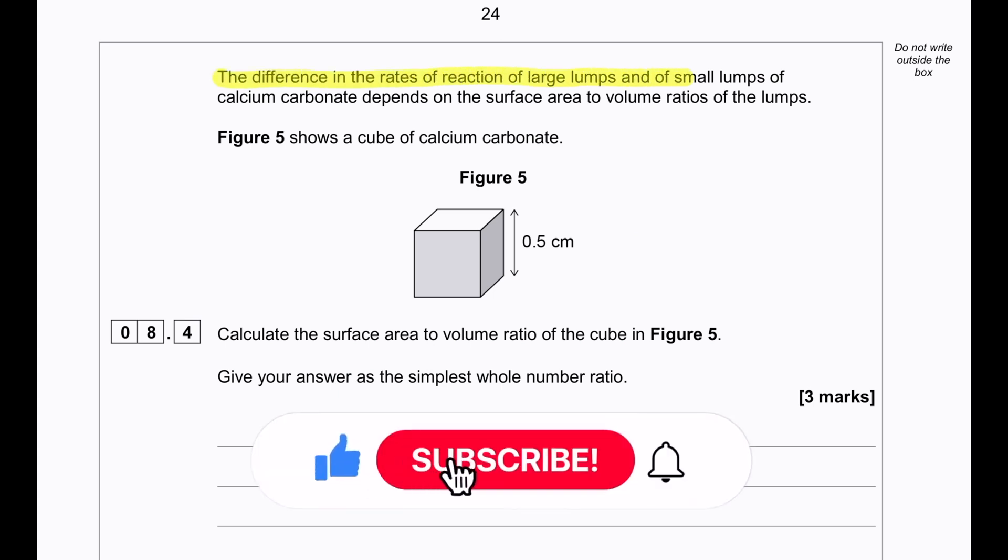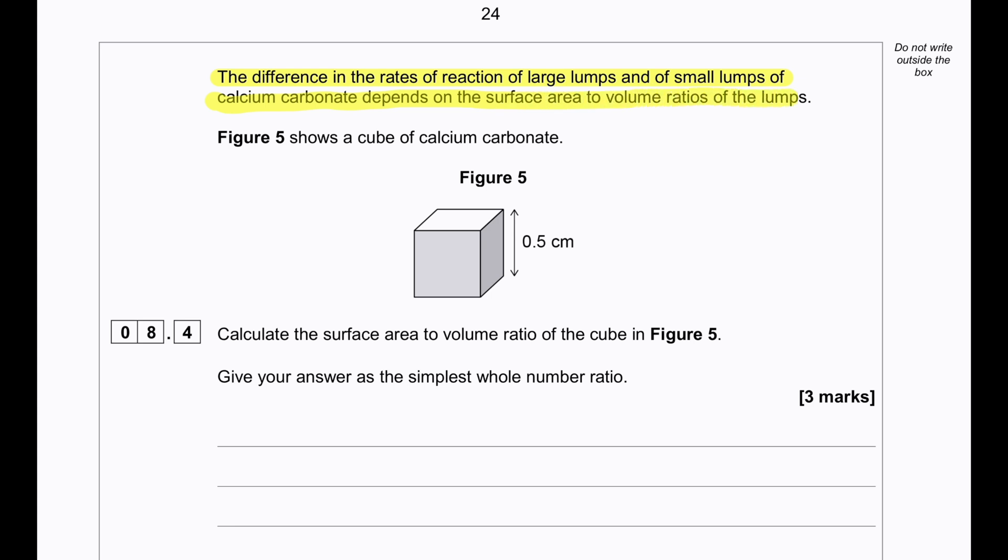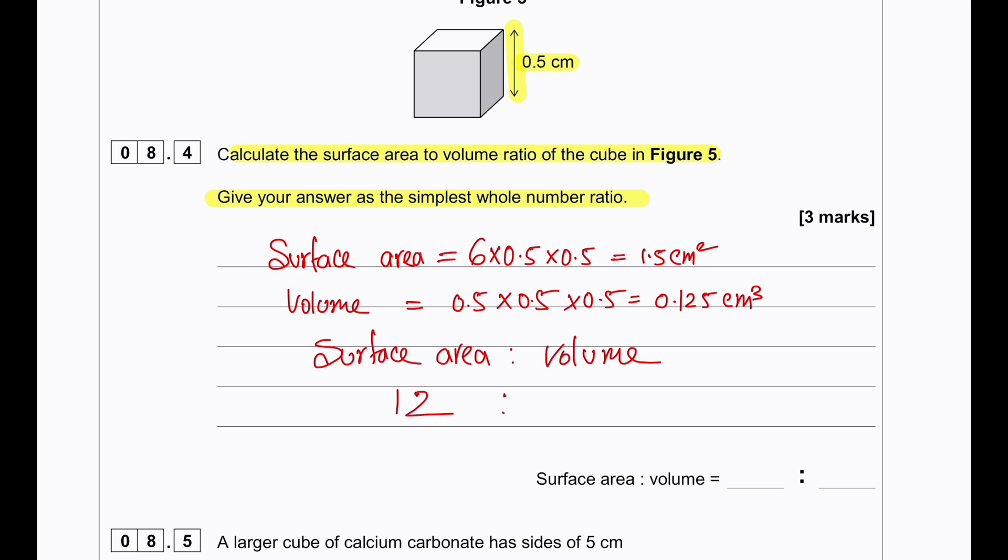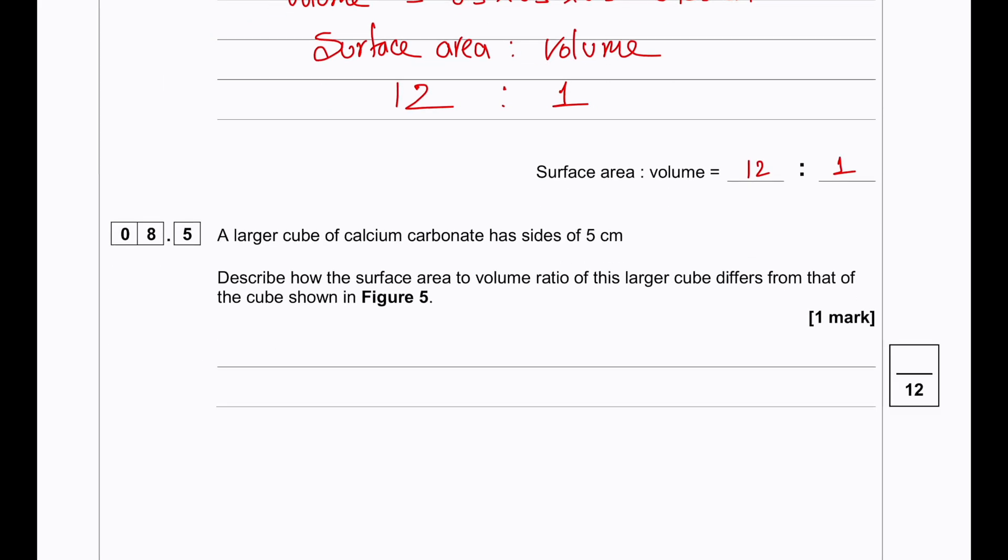The difference in the rates of reaction of large lumps and of small lumps of calcium carbonate depends on the surface area to volume ratio of the lumps. Figure 5 shows a cube of calcium carbonate which is 0.5 centimeter on the sides. Calculate the surface area to volume ratio of the cube in figure 5. Give your answer as the simplest whole number ratio. So to calculate the surface area, we have to multiply 6 sides with 0.5 times 0.5. This gives us 1.5 cm squared. And for the volume, we will multiply all 3 sides: 0.5 times 0.5 times 0.5 which gives us a volume of 0.125 cm cubed. When we do the surface area to volume ratio, we find 12 is to 1.